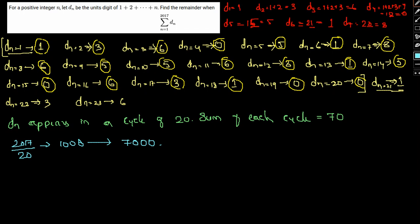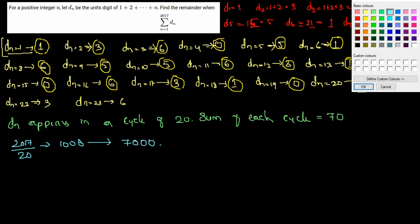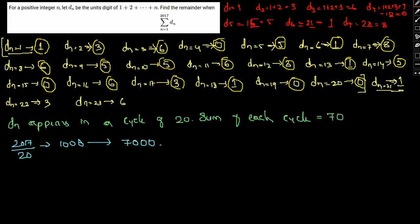Okay guys, I made a small mistake while we are writing the question itself. The question we need to find the remainder when this particular term is divided by 1000. This is the other part of the question which by mistake we have forgotten to include. So basically we need to find summation 2017, n equal to 1, dn mod 1000. This is what we need to find. Let's work towards that.